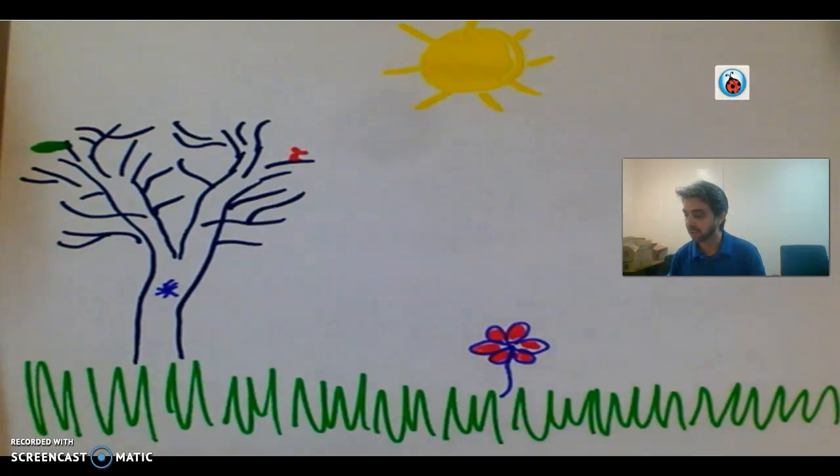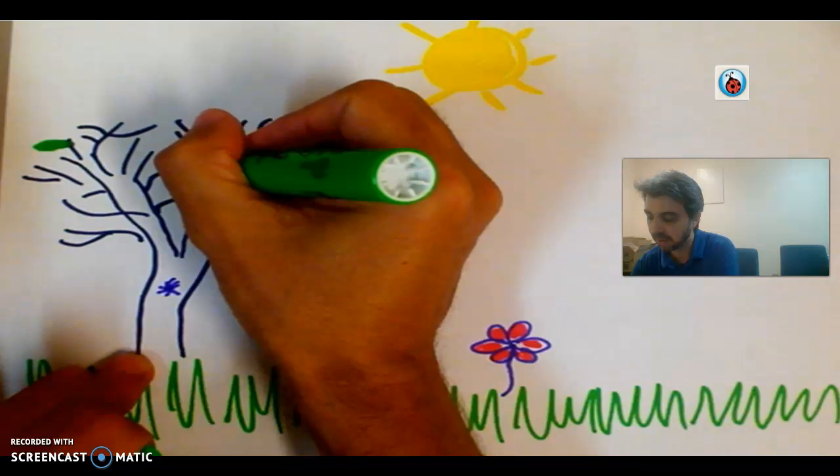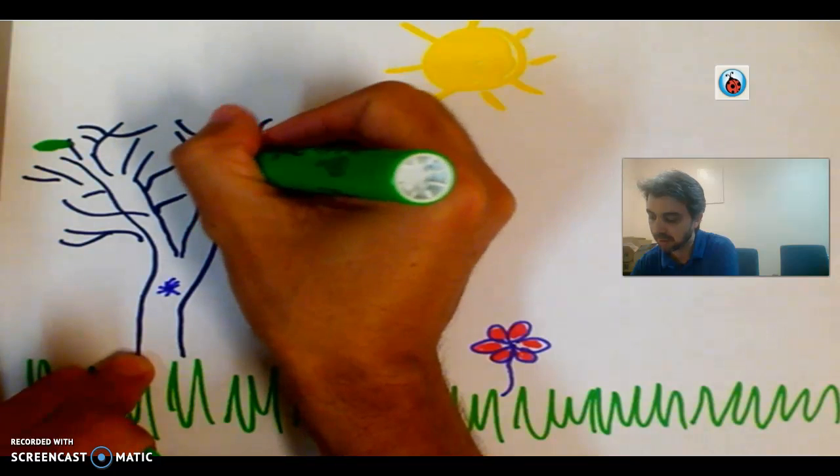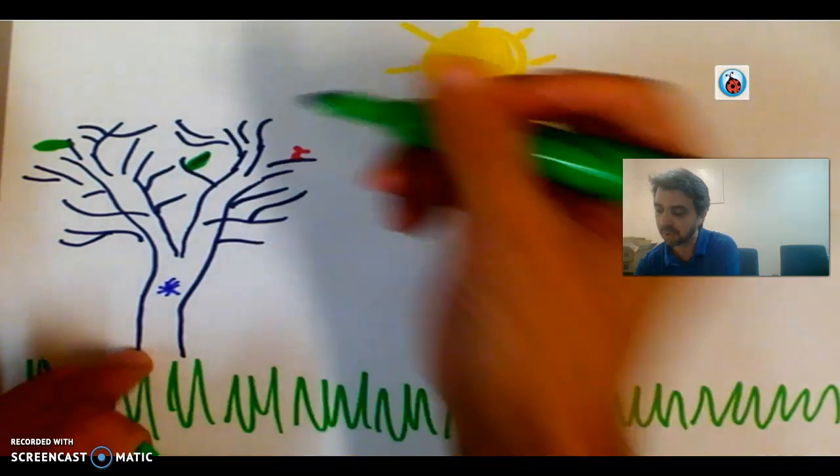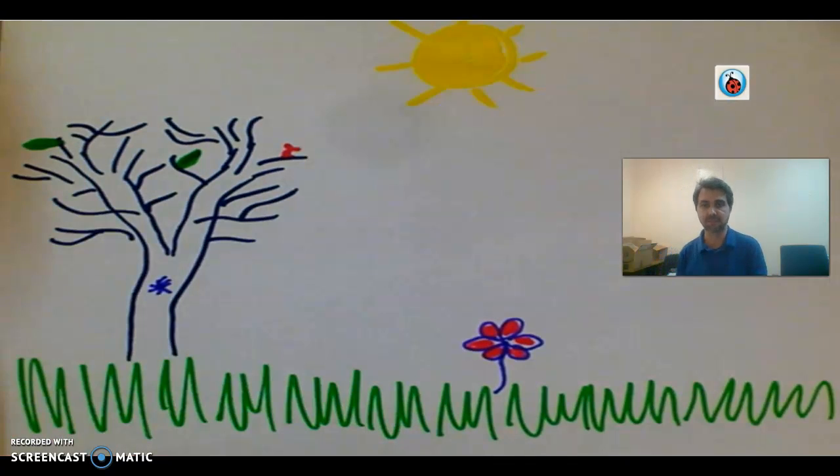So let's draw another leaf. This tree is looking very lonely with only one leaf. So let's draw another leaf. So draw mine here. You can draw yours wherever you want. So now I have one, two leaves. All right, you should have two leaves as well.